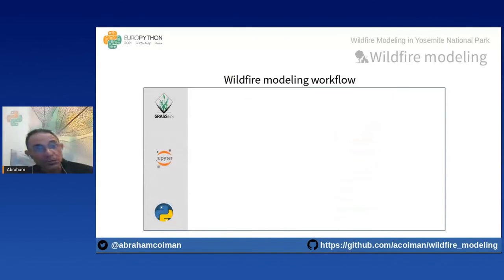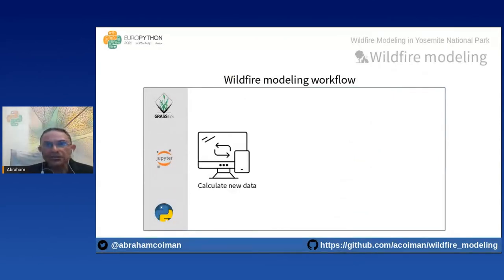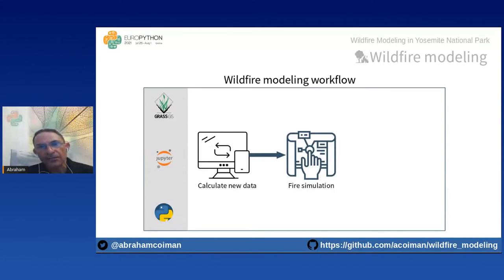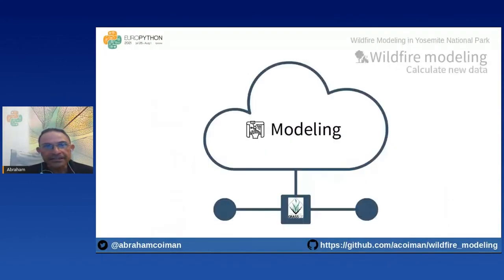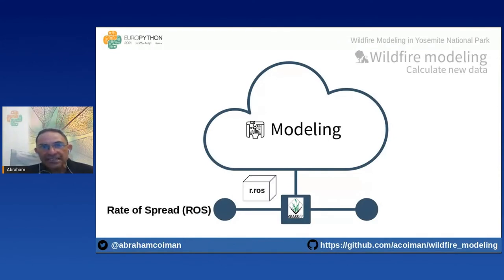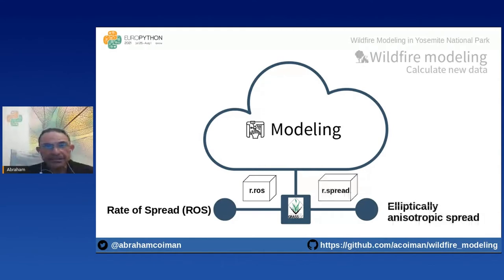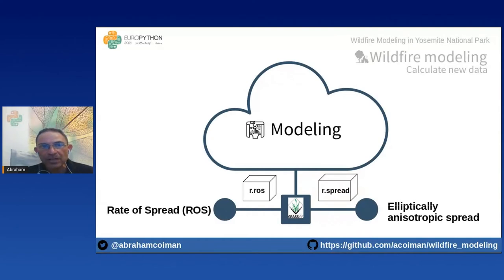To answer these questions: first we derive new data from the imported data for each study area; second, we model fire events for each area; and third, we visualize wildfire propagation. Modeling fire events is a two-step process. First, we execute the GRASS GIS r.ros module, which generates rate-of-spread raster maps. Second, we run the r.spread module, which simulates analytically anisotropic spread — meaning variable conditions in different directions — generating a raster map of cumulative time of spread.